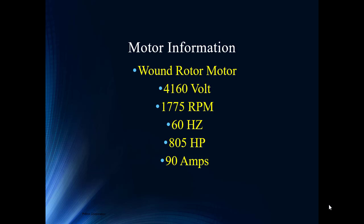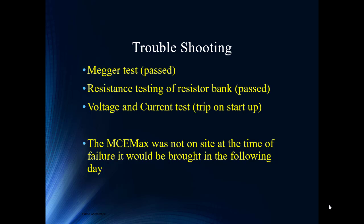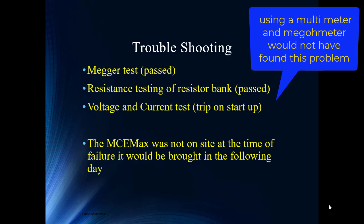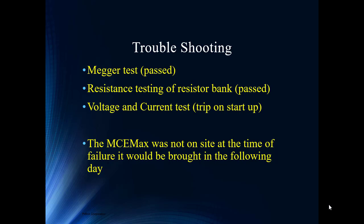So this is what they had on site. And this is what they could do. They could take a megger out there. Well, guess what? Resistance to ground was fine. Nothing had gone to ground. Resistance testing of the resistor bank also passed. So there's no high resistance connection there. You can't get voltage and current because it trips on startup. You and I both come from a military background. And what were we always asked to do? Save the world with a multimeter and a megohmmeter. Absolutely. And those two are good tools, but not necessarily the ones that are going to solve the problem in every situation. Right. So they didn't have our technology on site at the time of failure, but they were going to be bringing it the next day.